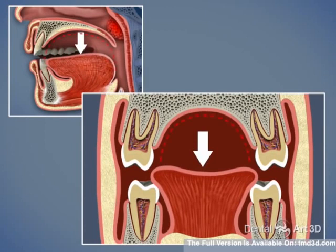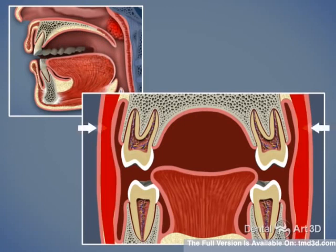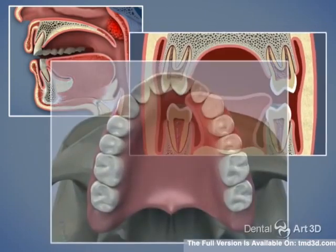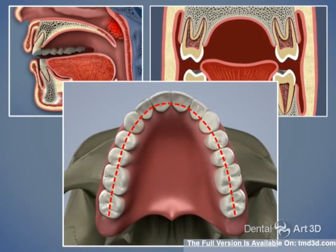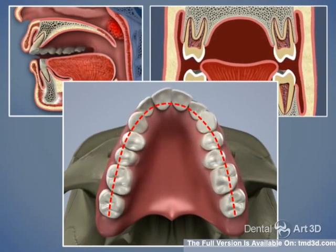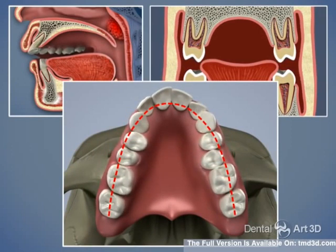Nasal breathing is the correct way for air to enter the body, and during nasal breathing, the tongue rests at the palate and the pressure of the cheeks is balanced by the tongue. During mouth breathing, the pressure from the cheeks is unopposed by the tongue. The oral system becomes unbalanced and results in the deformation of the upper jaw, creating a V-shaped arch as opposed to a correct U-shaped arch.